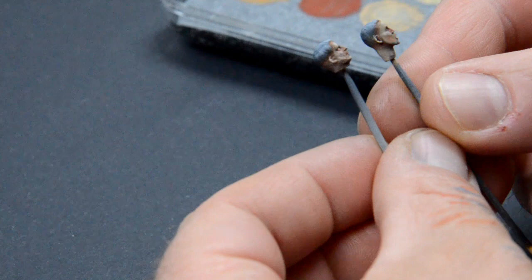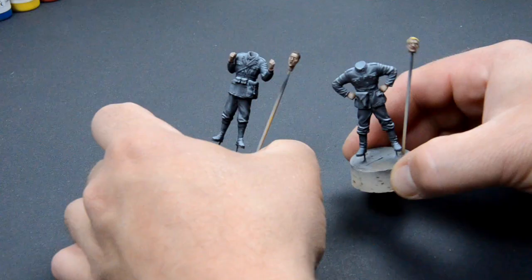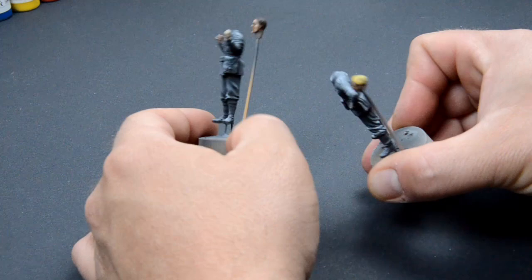So now we can check our faces. I'm quite happy with them. Gennaro's hair was painted with black brown. And for the blonde tone I mixed flat flash with deep yellow. Now let's move to those uniforms.